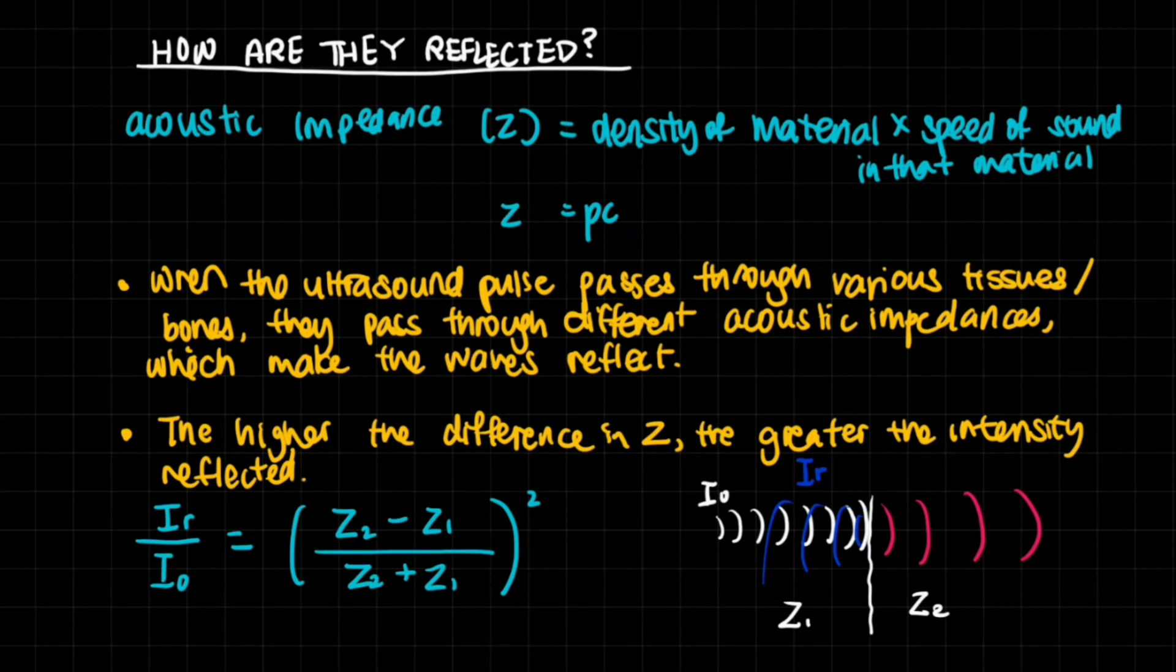For instance, let's think about the acoustic impedance of bones and blood. Blood has a much lower density than bone and a much lower speed of sound than bone. Whereas bone has extremely high density - one of the highest in the body - and because it's solid as well, speed will travel really quickly in bone. You can see that the Z value for bone is much higher than the Z value for blood.